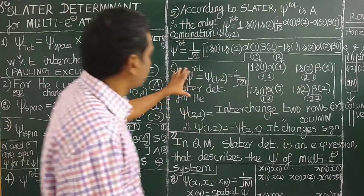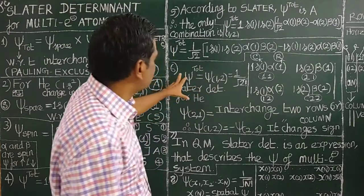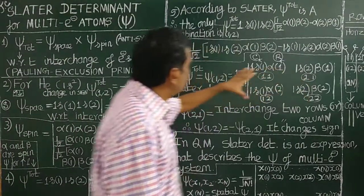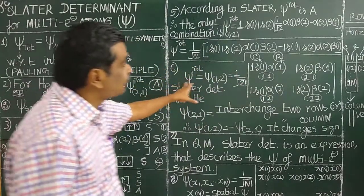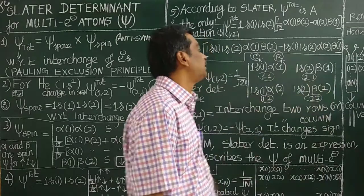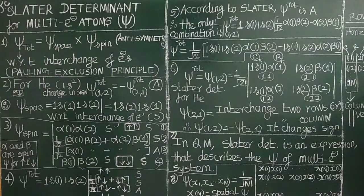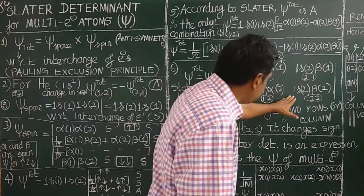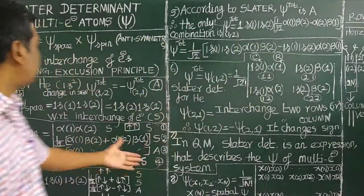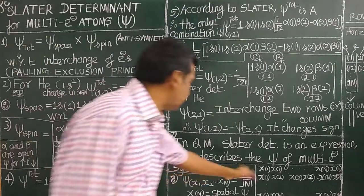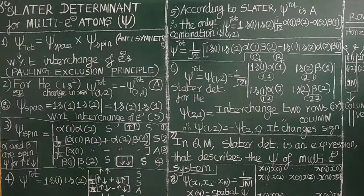He represented the wave function in the form of a determinant called the Slater Determinant. Now let us see how he derived the Slater Determinant for the helium atom, and it can be extended to multi-electron atoms. It is very simple, very easy if you follow along.